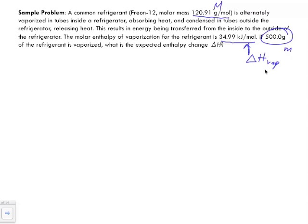We've got our mass, we've got our molar mass, we've got this enthalpy of vaporization. But remember, this 34.99 kilojoules per mole is referring to one mole of this refrigerant. So what we need to do is, we are being given 500 grams. So if you look back at your stoichiometry, we use molar mass, mass, and number of moles.